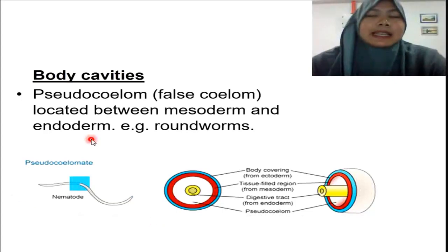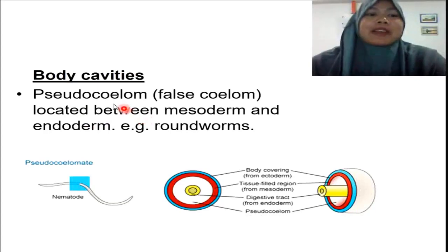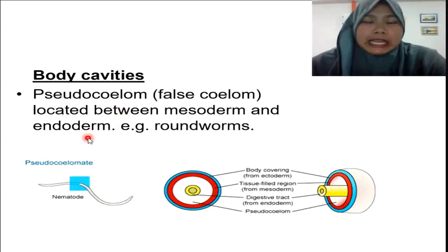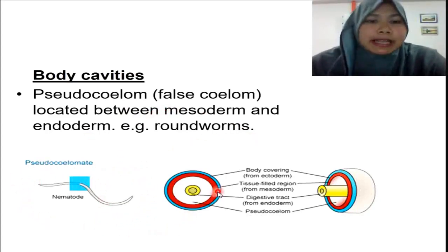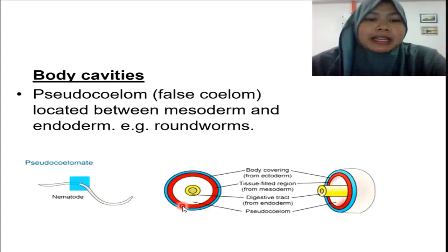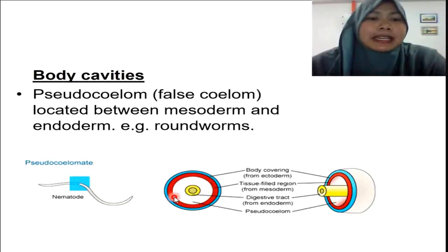Some other animals have a false coelom, which we call a pseudocoelom, whereby the cavity is located between the mesoderm and endoderm layers. They still have three layers of tissue — the blue ectoderm layer, the yellow endoderm layer, and the red mesoderm layer — but the body cavity is located between the mesoderm layer and the endoderm layer. This is the characteristic of a pseudocoelom.